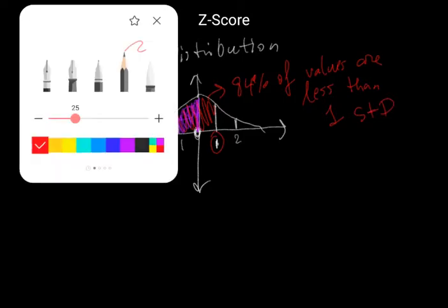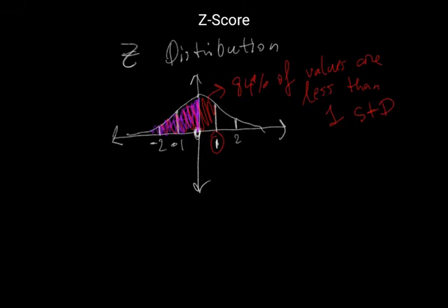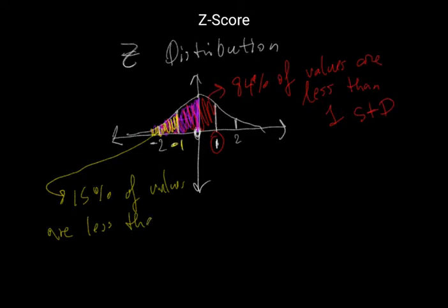Now, if we had a z-score of minus 1, this means that about 15% of values are less than minus 1.